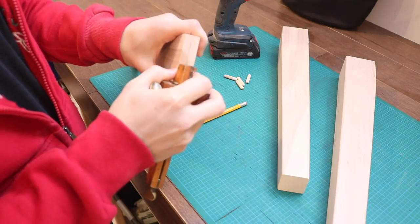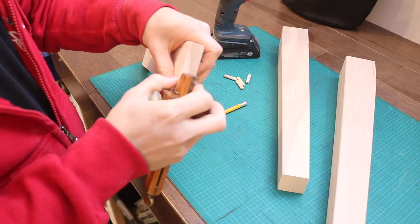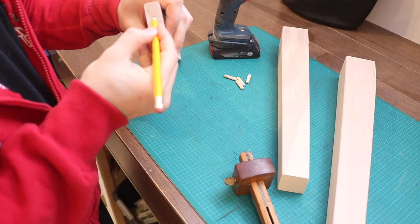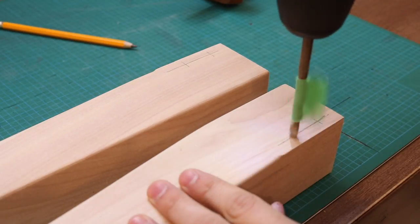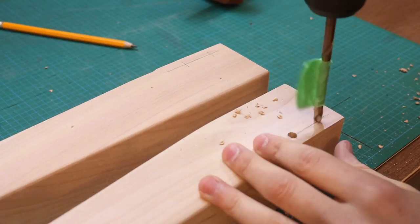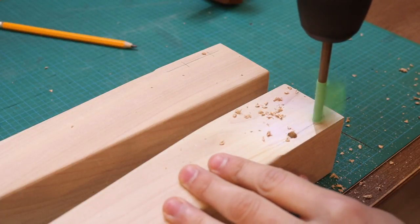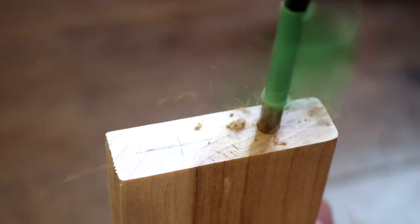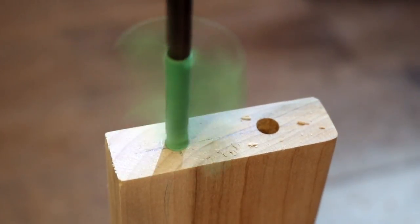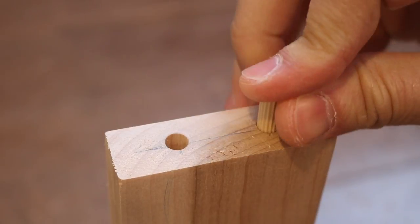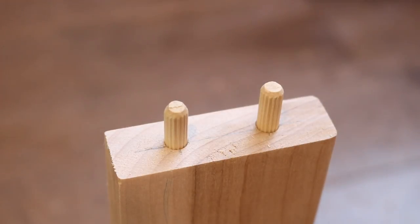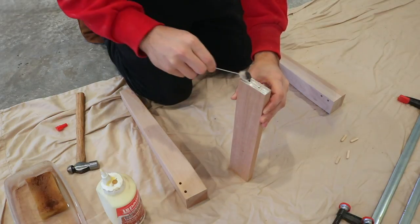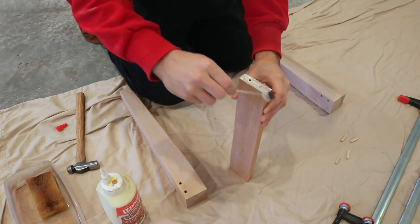I decided to assemble the chairs using quarter inch dowels, two at each connection. So I used the marking gauge to scribe the center line of the front rails, then drilled the dowel holes in the rail and the front legs. I assembled all the front legs first, applying glue to each piece, then inserted the dowels and clamped everything together.